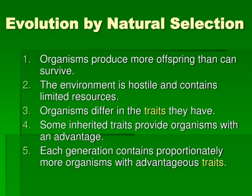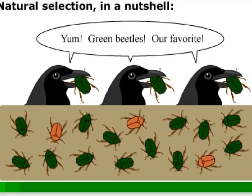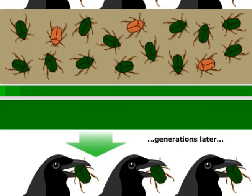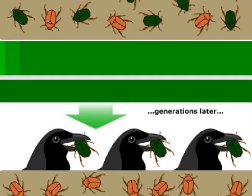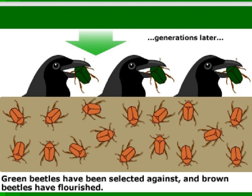Organisms produce more offspring than can survive, but due to the environment around them they adapt new traits each time there is a new change in the environment. For example, birds used to eat green beetles. They kept eating green beetles until green beetles were selected against and brown beetles flourished. So now the birds had to change the beetles they eat from green to brown. This is what natural selection means — animals will adapt according to the environment.